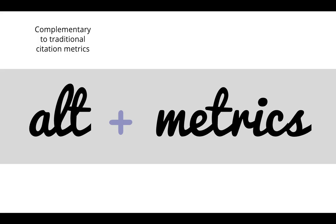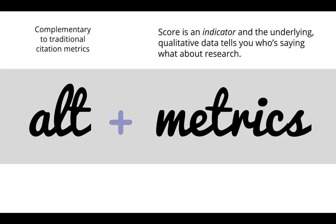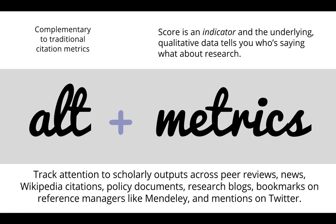Altmetrics are complementary to citation metrics, and the score is an indicator. The underlying qualitative data tells you who's saying what about your research. It's about tracking attention to scholarly outputs across peer reviews, news, Wikipedia citations, policy documents, research blogs, bookmarks on reference managers like Mendeley, and mentions on Twitter — a lot of things we haven't measured before, but which have been taking place for a few years, and it's useful to find out where and by whom.